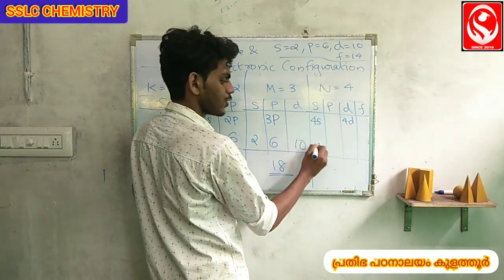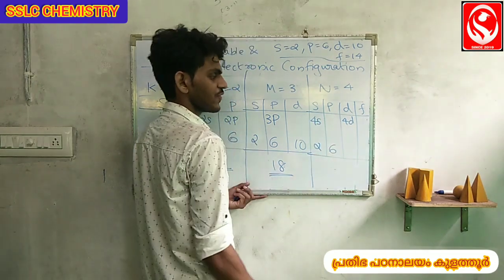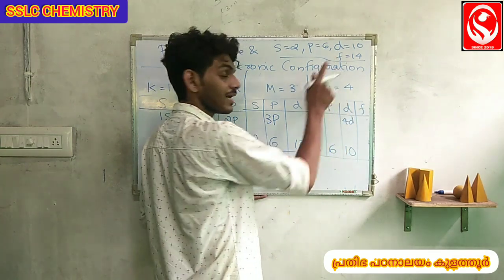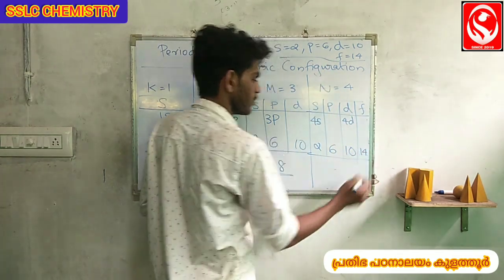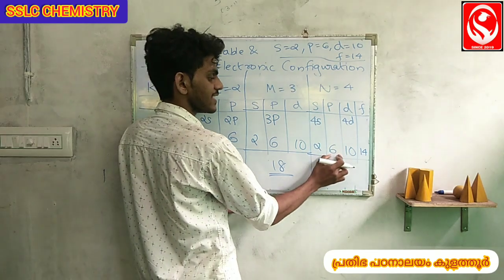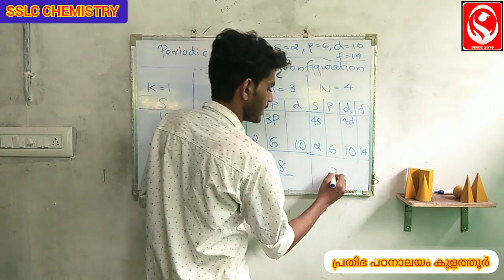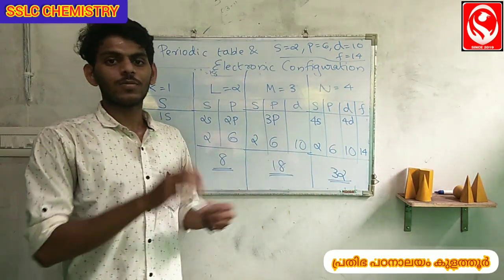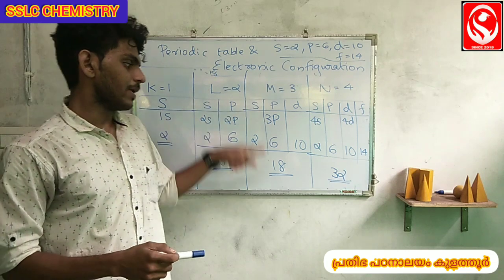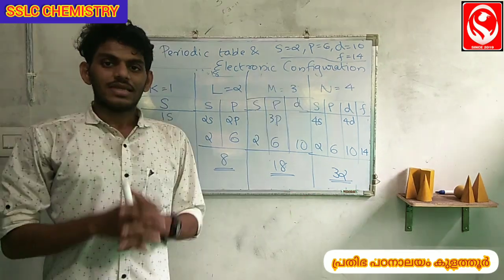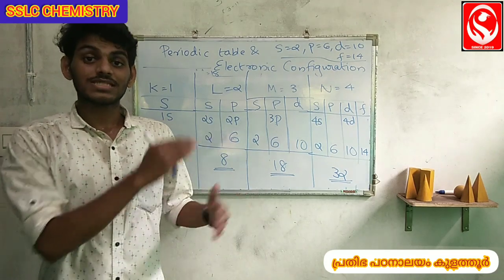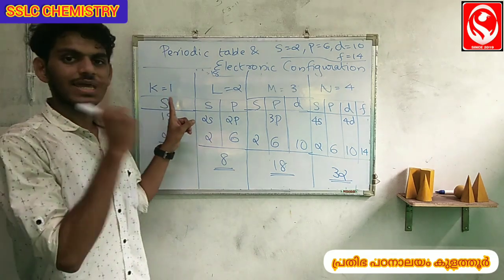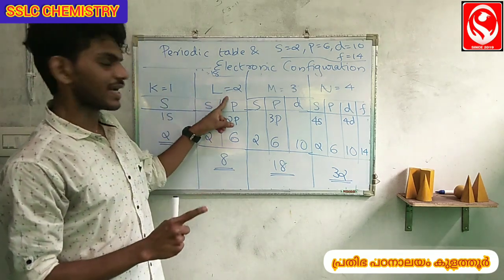For the N shell: s plus p plus d plus f equals 2 plus 6 plus 10 plus 14 equals 32 electrons. So the N shell holds 32 electrons, confirming our earlier formula.